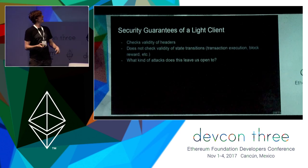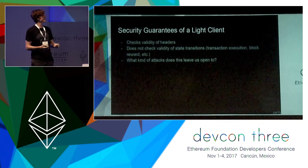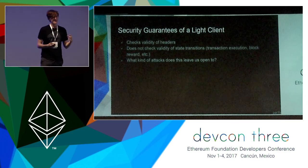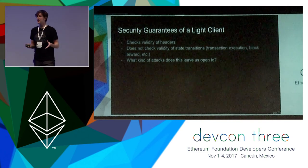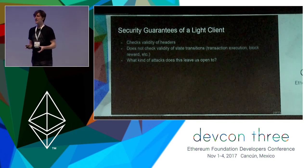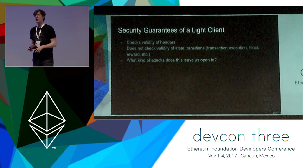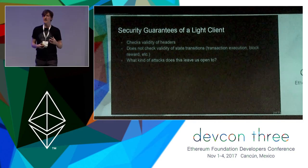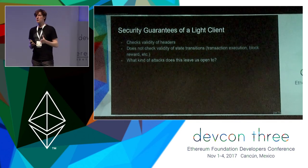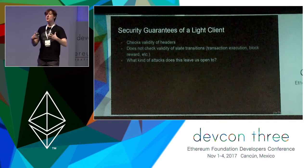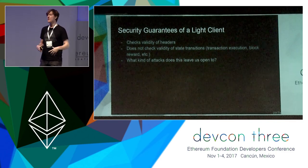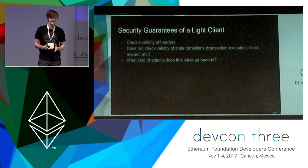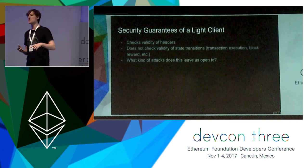A lite client checks the validity of headers but doesn't necessarily check the validity of state transitions, which might leave it open to attack. A miner could introduce an invalid state transition, but these attacks are not particularly likely because they have to be targeted. The assumption is that miners will only build on top of valid blocks, so a majority acting honestly couldn't perform this attack on the whole network — only on a specific targeted person if they took up all their peer slots and sent fake headers.